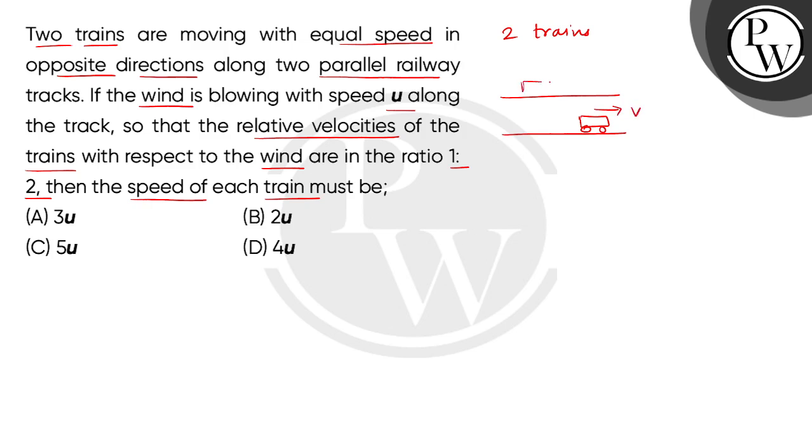And on the other track, the opposite parallel track in the opposite direction, the other train is going with a speed v. The wind speed u is given here in the right direction, u.